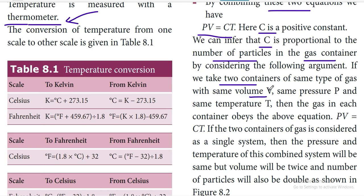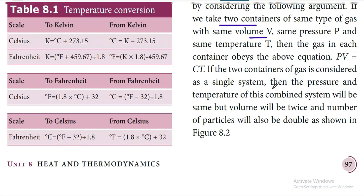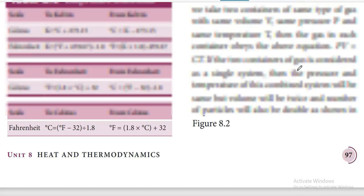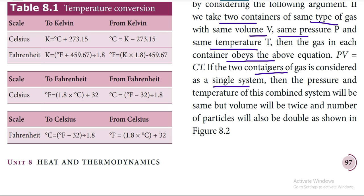We take two containers of the same type of gas — as shown in the diagram — with the same volume, same pressure, and same temperature. If the two containers are considered as a single combined system, then the pressure and temperature of this combined system will be the same, but the volume will be twice and the number of particles will also double.